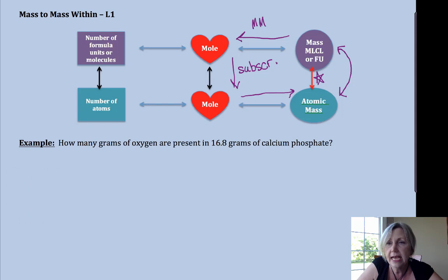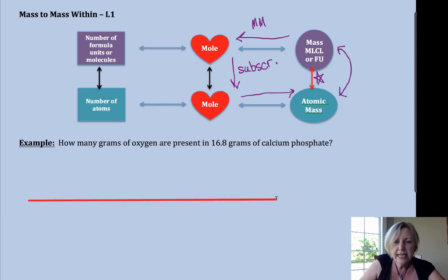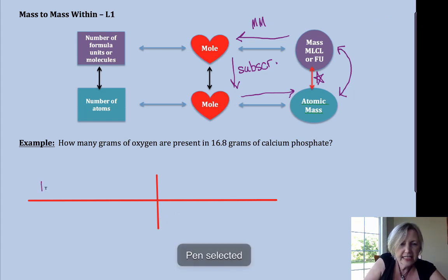So in this case we have calcium phosphate and we want to know how many grams of oxygen are within that. So I have 16.8 grams of calcium phosphate. Hope you know those polyatomic ions.